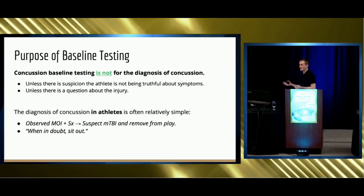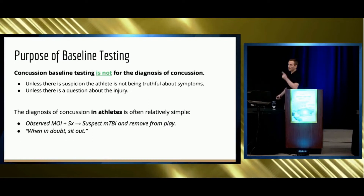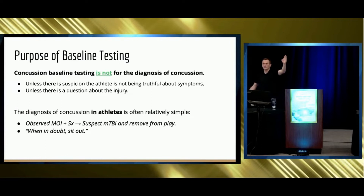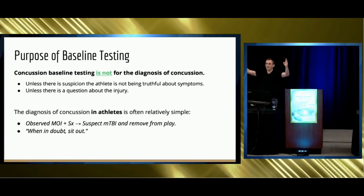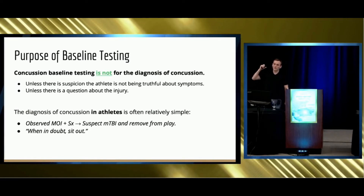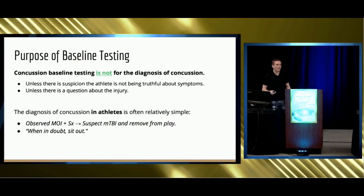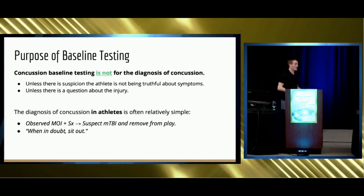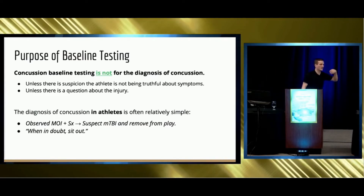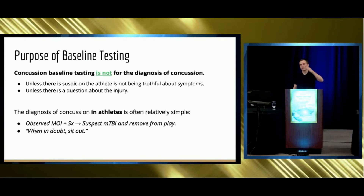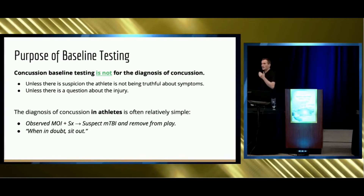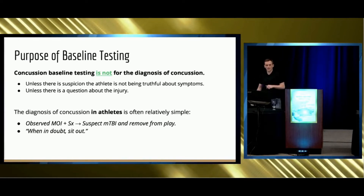The PCSS and the SCAT-5 — if they have even one symptom, even at a severity of one, you're pulling them out. When in doubt, sit them out. There's also research that body temperature actually correlates with glutamate excitotoxicity, so the sooner you can cool them down, theoretically the sooner you can minimize some of that excitotoxicity.